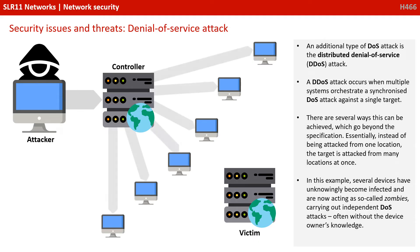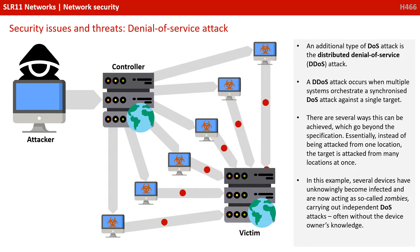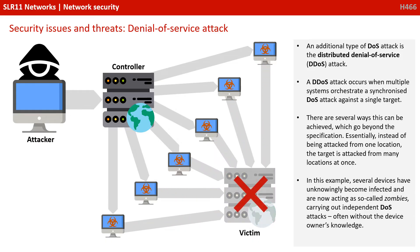An additional type of DOS attack is the distributed denial of service, or DDoS attack. A DDoS attack occurs when multiple systems orchestrate a synchronized DOS attack against a single target. Essentially, instead of being attacked from one location, the target is attacked from many locations at once. In this example, several devices have unknowingly become infected and are now acting as so-called zombies, carrying out independent DOS attacks, often without the device owner's knowledge.